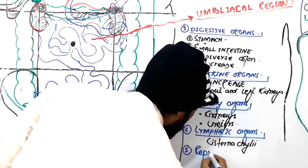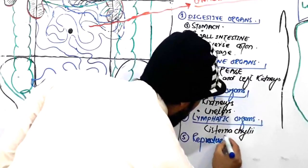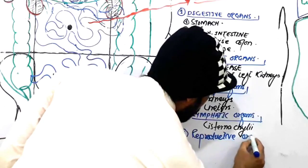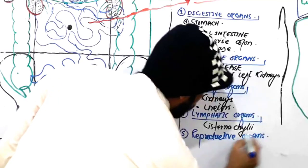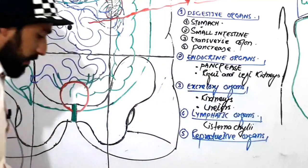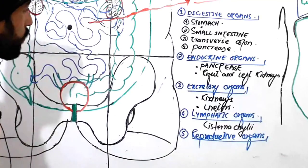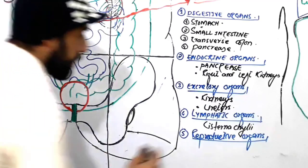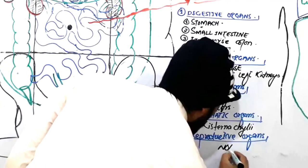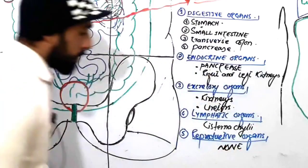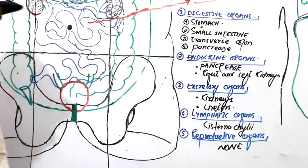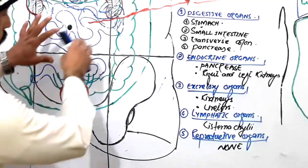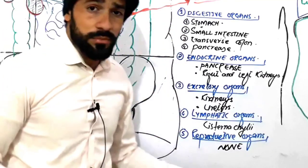The fifth group: are there any reproductive organs in the umbilical region? No, my dear friends — there are no reproductive organs found in the umbilical region. So we say none of the reproductive organs are found here.